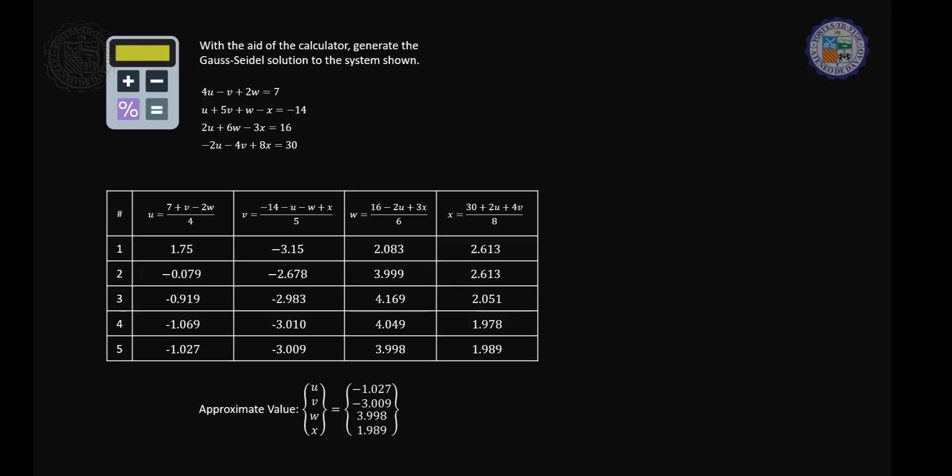But before going to the calculator, let us assign the variable u, v, w, and x into a letter that is available in the calculator. So let's assign u as equal to a, v is equal to b, w is equal to c, and x is equal to d. So that whenever we encode the variable u in terms of v and w, we will be encoding that as a is equal to 7 plus b minus 2c all over 4. The same with the other equations.